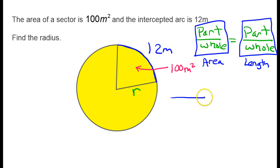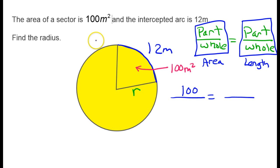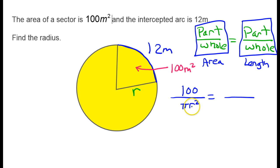So let's see what we've got. Part over whole for area: the partial area is the area of the sector, so that's 100 square meters. The whole area of the circle we don't know, but we know the formula is πr². So I'll put down πr². Notice there's the r — that's the variable we are looking for.